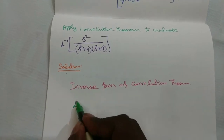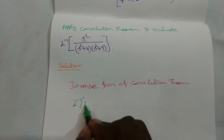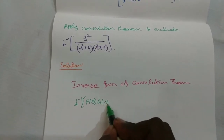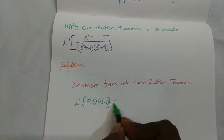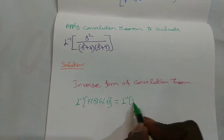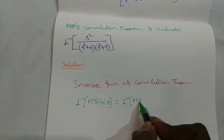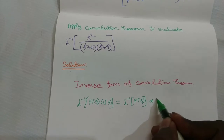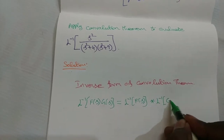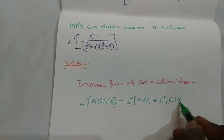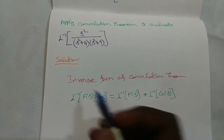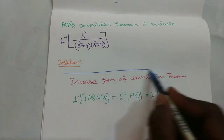The inverse form of the convolution theorem is: L inverse of F(s) into G(s) is equal to L inverse of F(s) star L inverse of G(s). This is the inverse form of the convolution theorem.